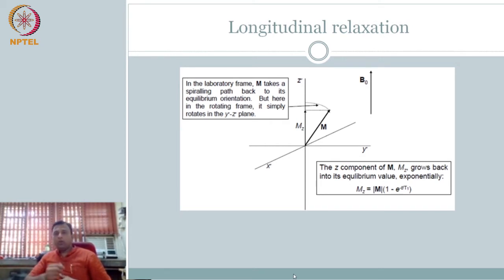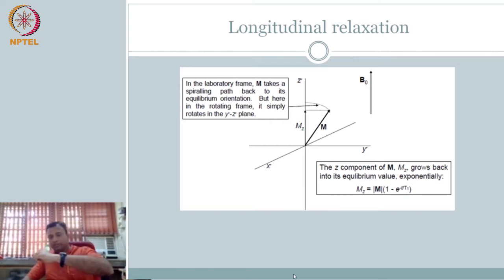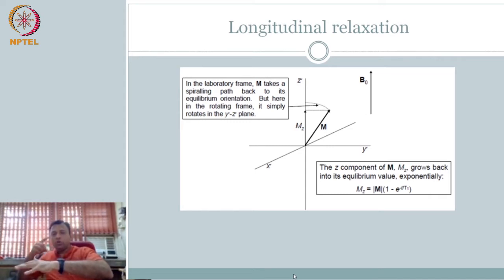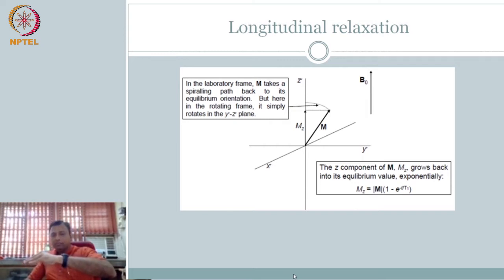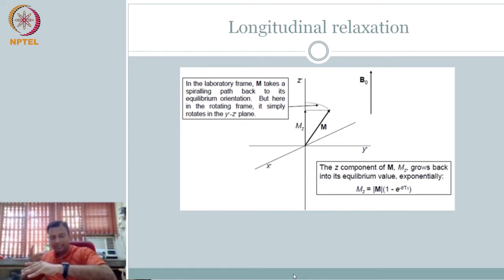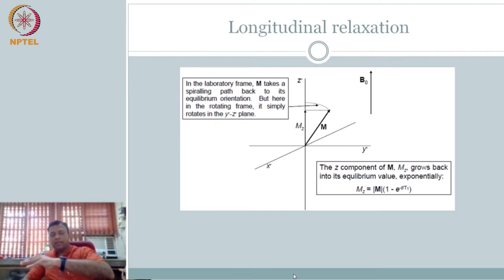There is one important tool to play this again — I have a signal which is transverse. I know the signal comes only from the transverse component. Now we talked about dephasing, so the signal is going down. So what happens if I want them to rephase again? How do I make it rephase? What is the meaning of this dephasing? Some nuclei — some vectors — some nuclei are moving faster, some are moving slower, slightly above and below the Larmor frequency, so they start to move away from each other.